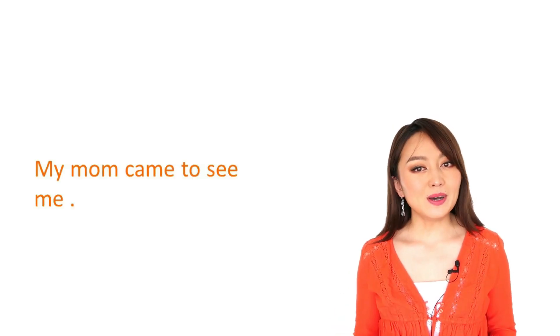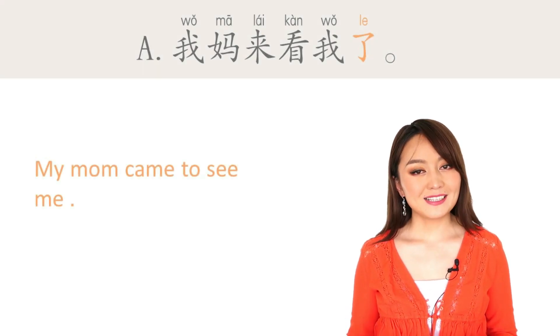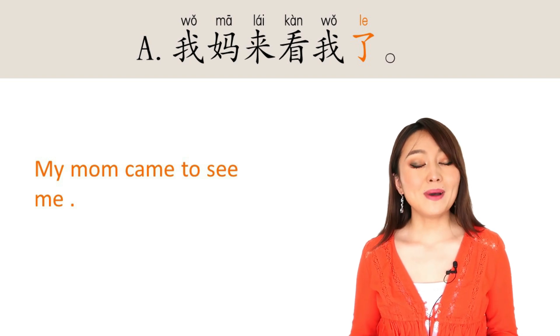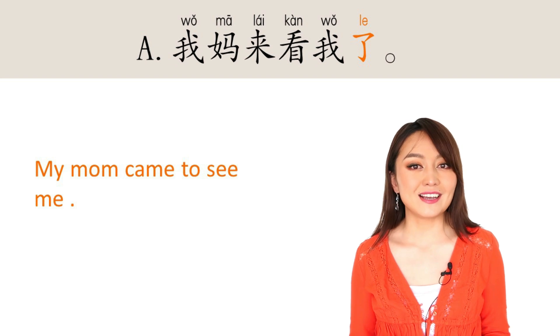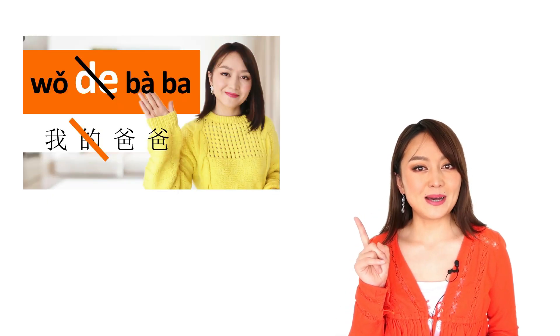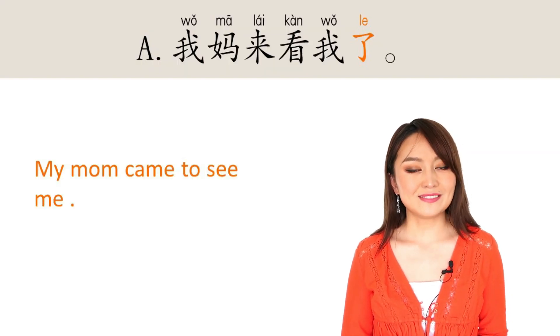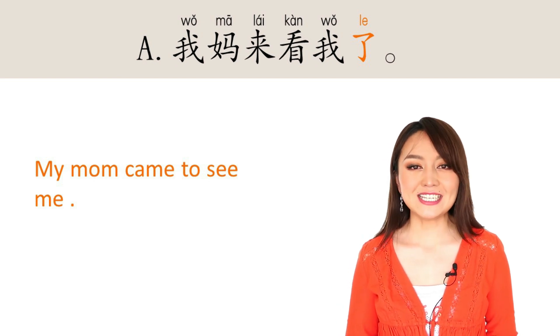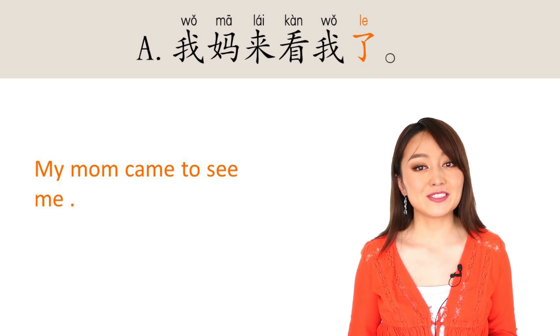谢谢你的支持。 Now it's your turn. How do you say: my mom came to visit me? Right — 我妈来看我了. If you wonder why 我妈 instead of 我的妈妈, check out my last video about the rules when you don't need to use 的. So we use 了 to start the conversation, to tell the fact that your mom came to see you.